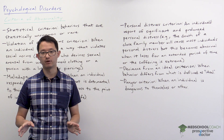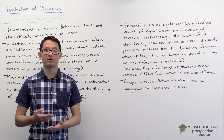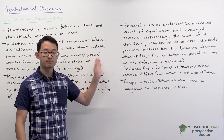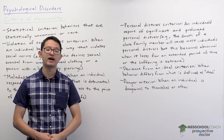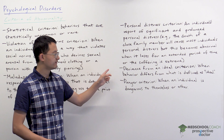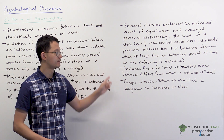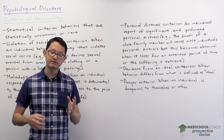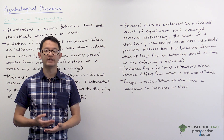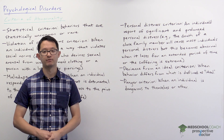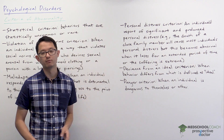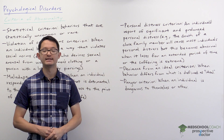This is not abnormal. However, if their personal distress lasts for an extended period of time or is particularly intense, that may be considered abnormal. Next, we have the deviance from an ideal criterion. This one's a little tricky because it requires defining what is considered ideal behavior. A person would be considered abnormal if their behavior differs from what is defined as ideal.